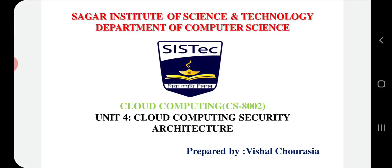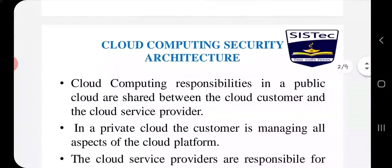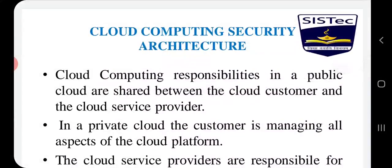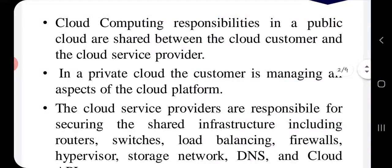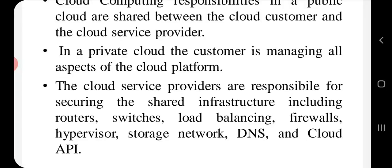Unit 4 is Cloud Security. Cloud Security is very important because in Cloud Computing, our data is managed by a third party. Our data is saved on a FAR data center, which is not in our hand. So security and privacy are the main concerns in Cloud Computing. In a public cloud, responsibilities are shared between the Cloud Customer and the Cloud Service Provider. In a private cloud, the customer manages all the aspects of the Cloud Platform, with limited users compared to the public cloud.